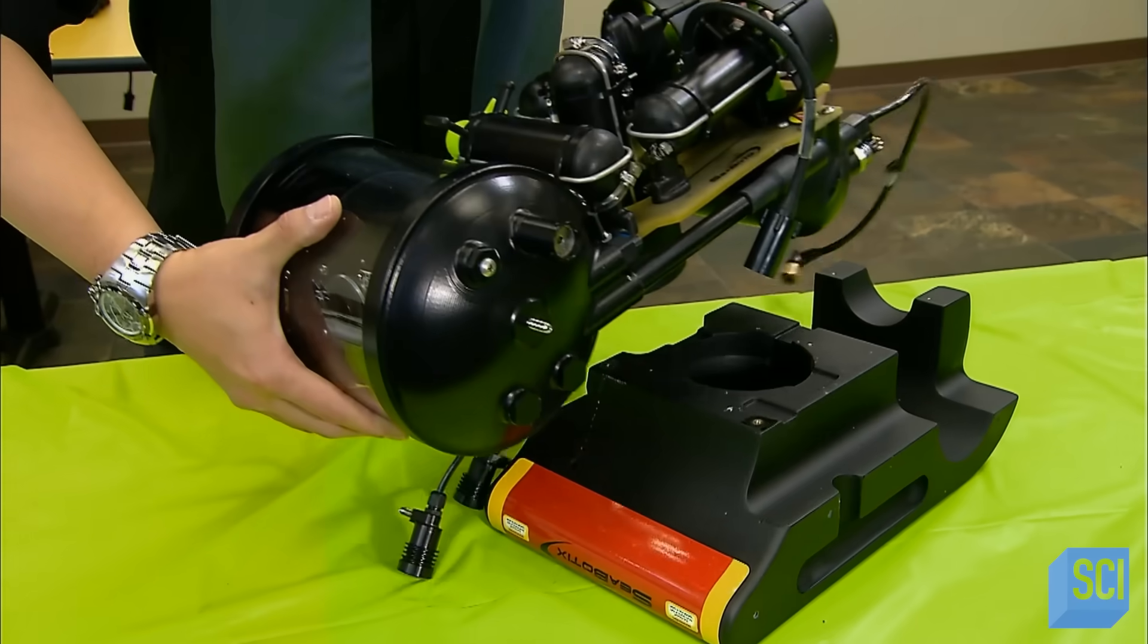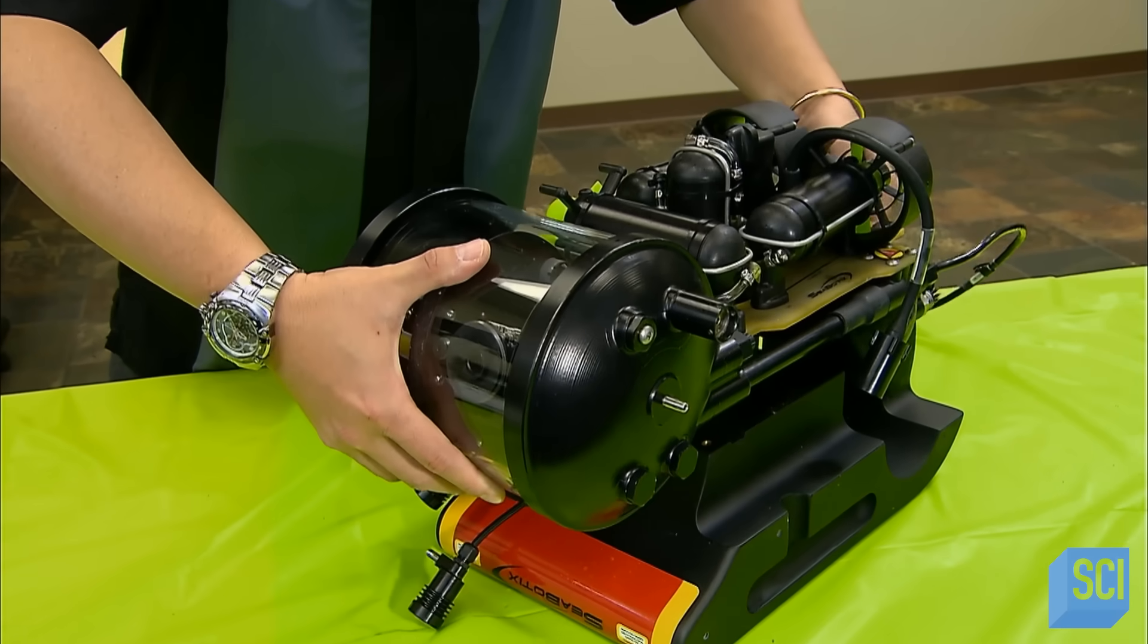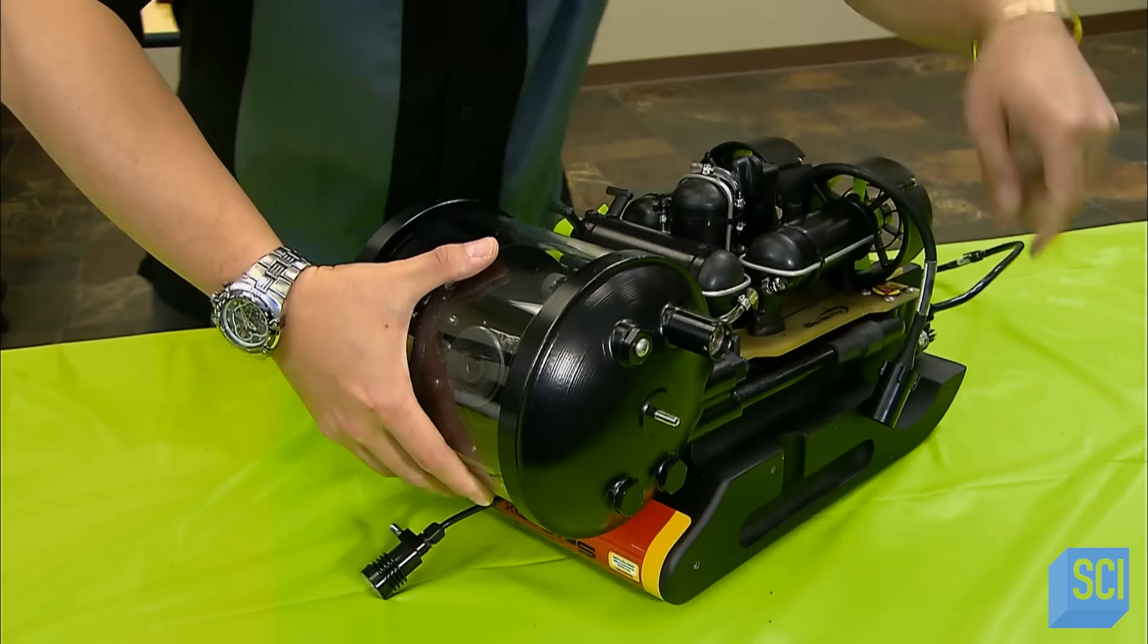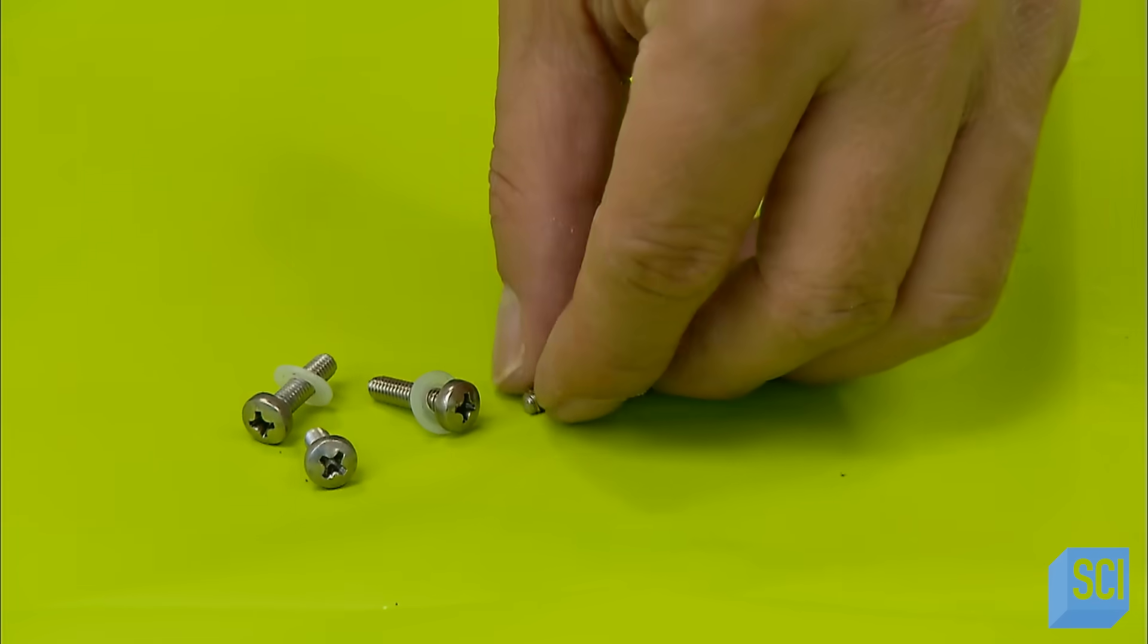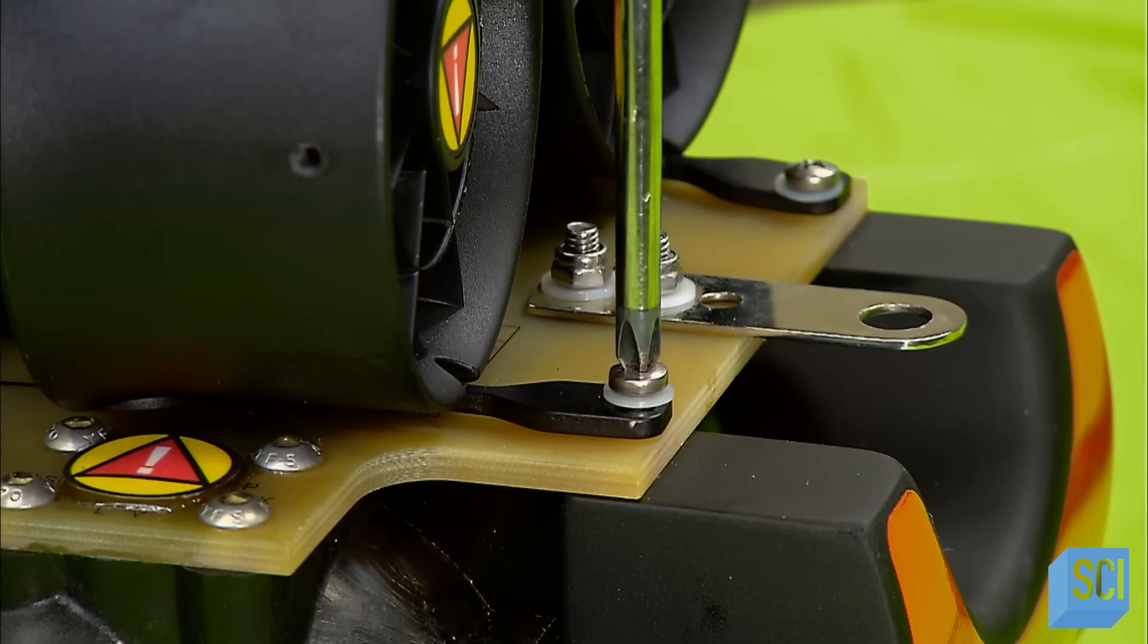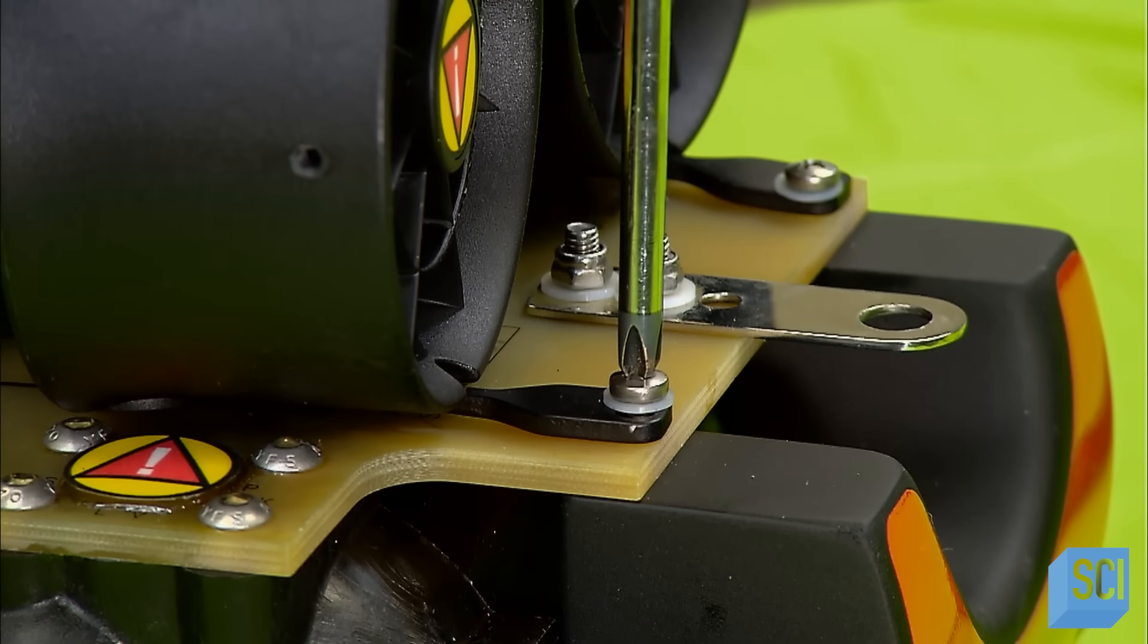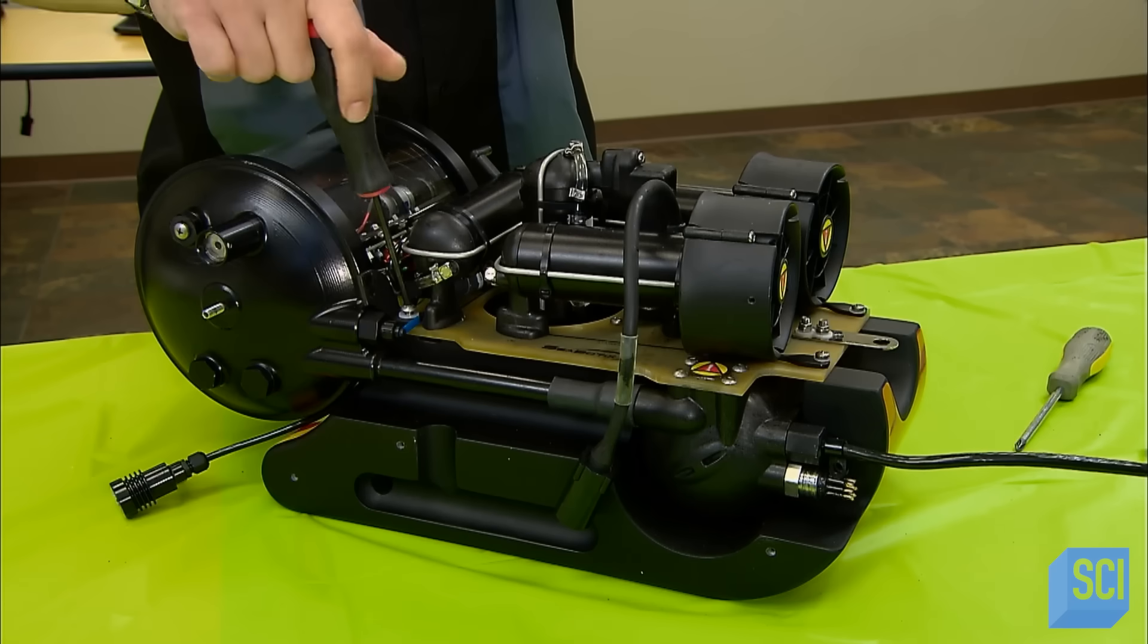For the thrusters to work at maximum efficiency, the robot must be neutrally buoyant, meaning neither too light nor too heavy. So once the robot is fitted with all its thrusters and electronics, technicians install the main float. Certain models have additional floats.